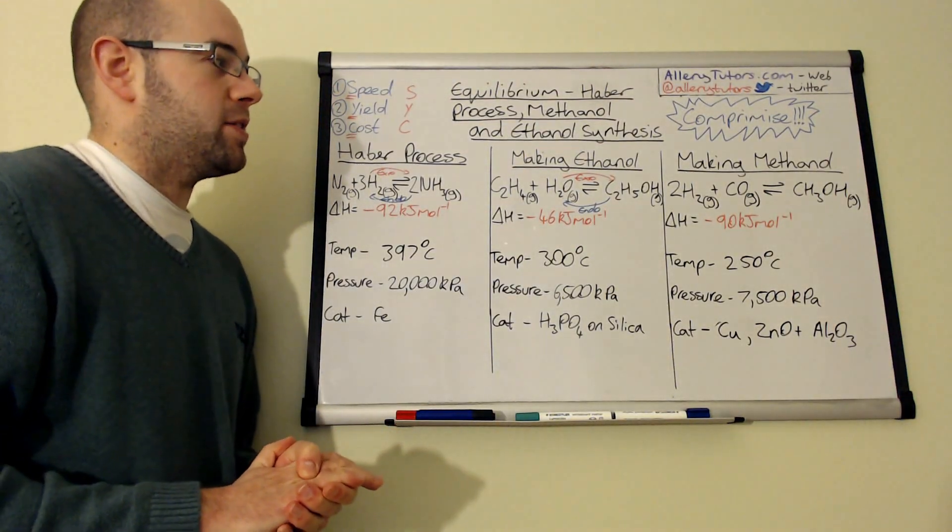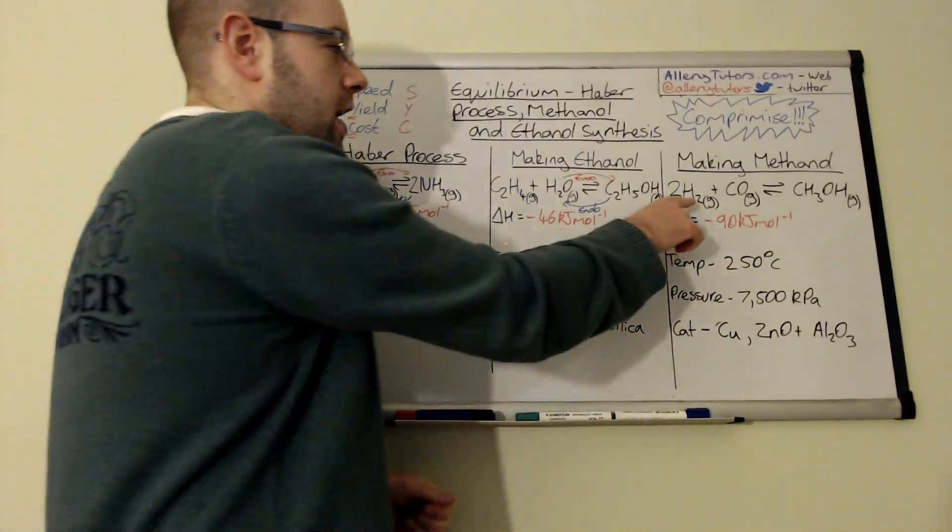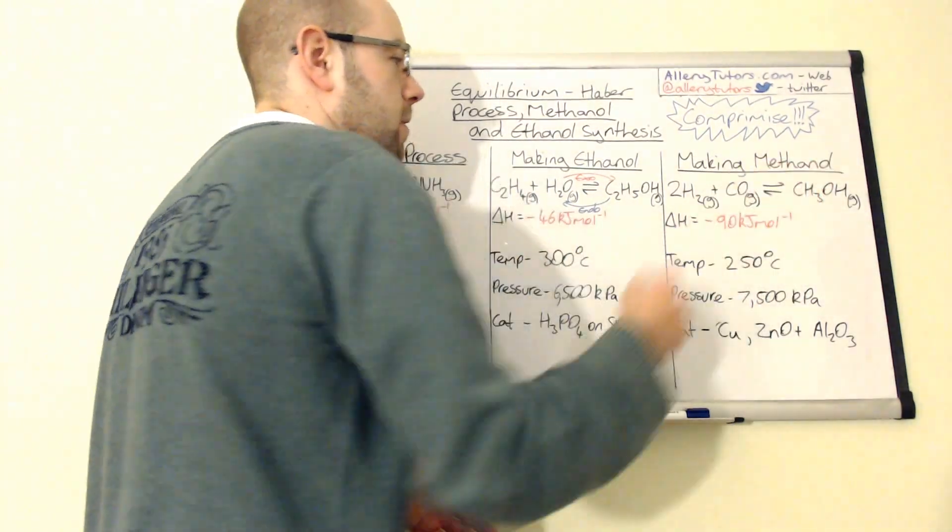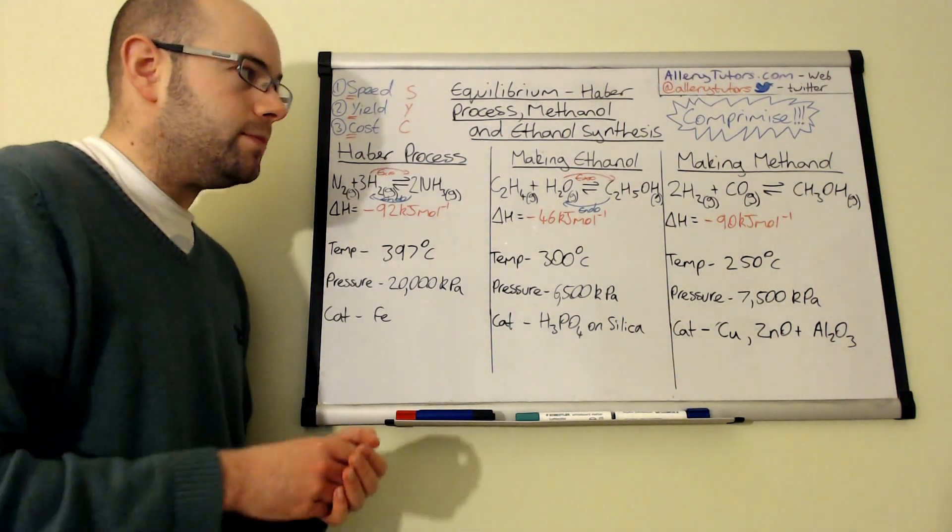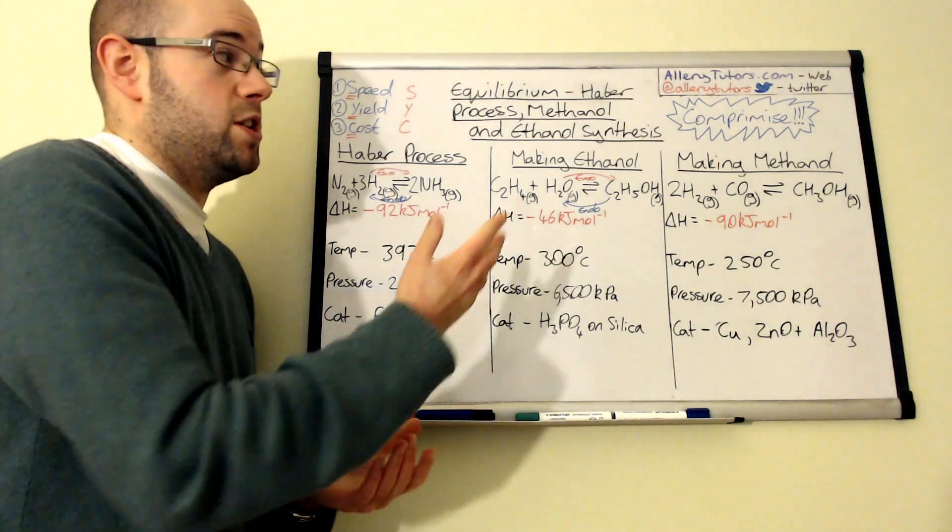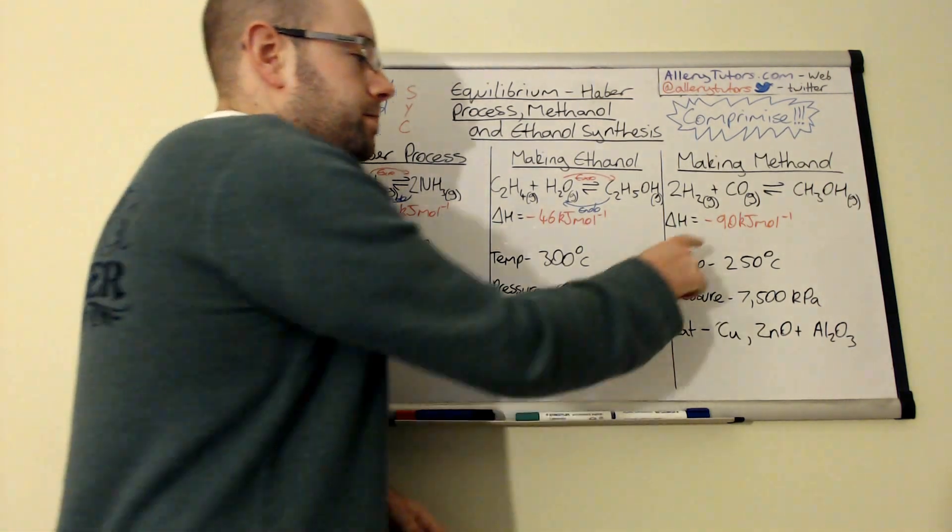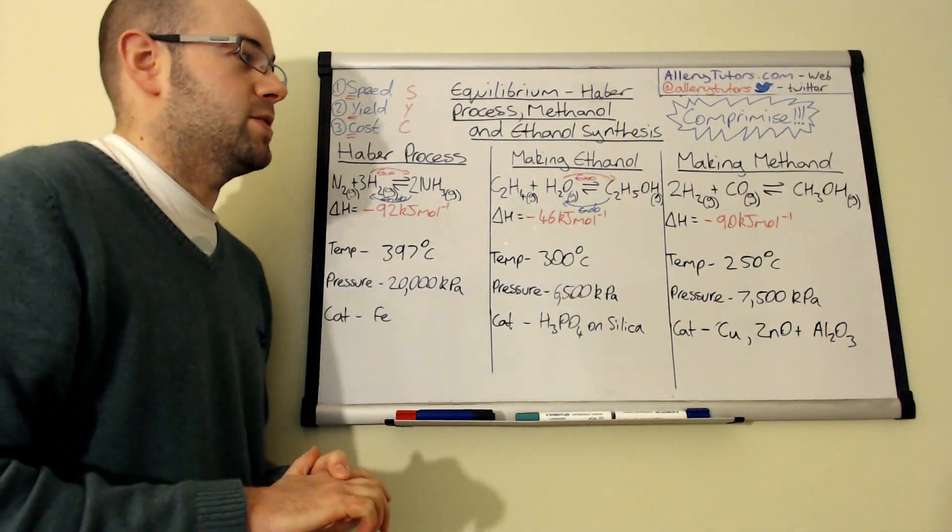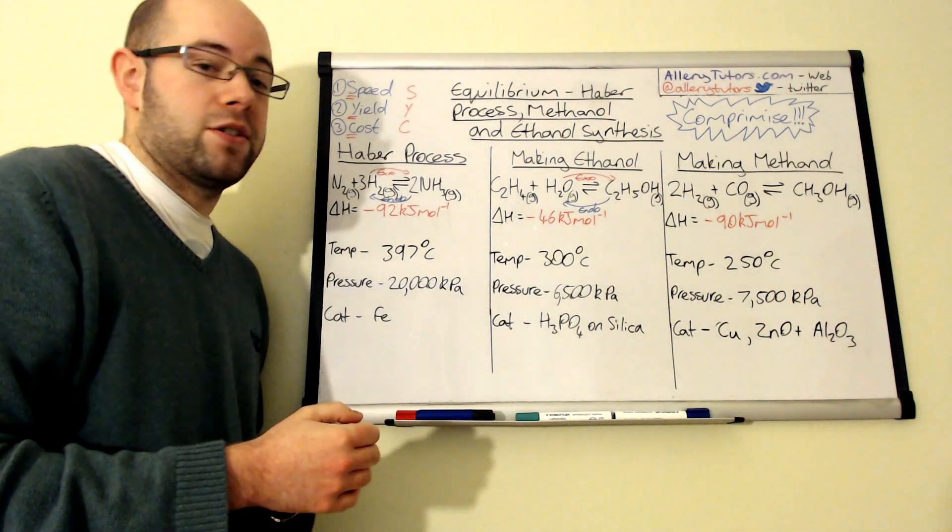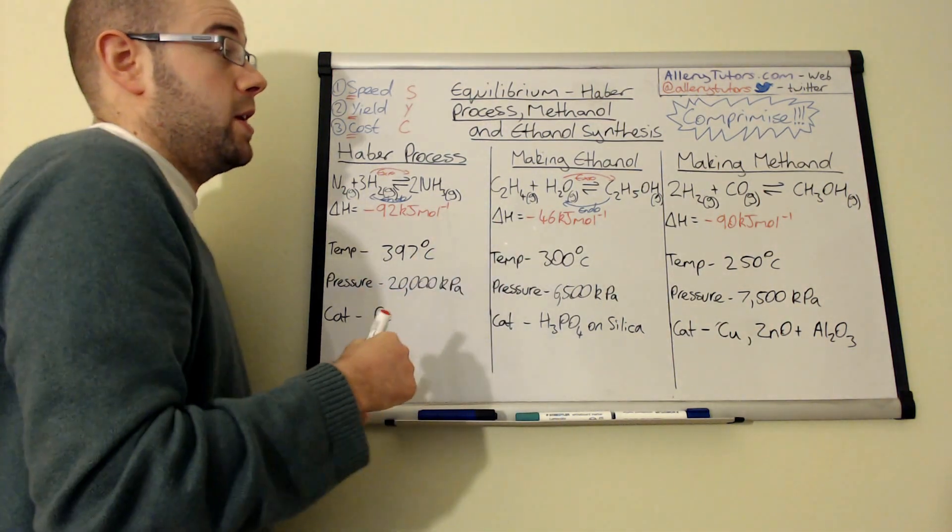If we come on to the last one, which is methanol: methanol can be made by using this mixture of gas that we call synthesis gas, hydrogen gas and carbon monoxide. Both gases, we'll mix them together and produce methanol. Now methanol is used in IndyCar racing in America, so it's really good as a fuel. It's a cleaner burning fuel than petrol. As you can see, it's an exothermic reaction that makes this. Sometimes you can mix things like ethanol into petrols as well and use it as a fuel.